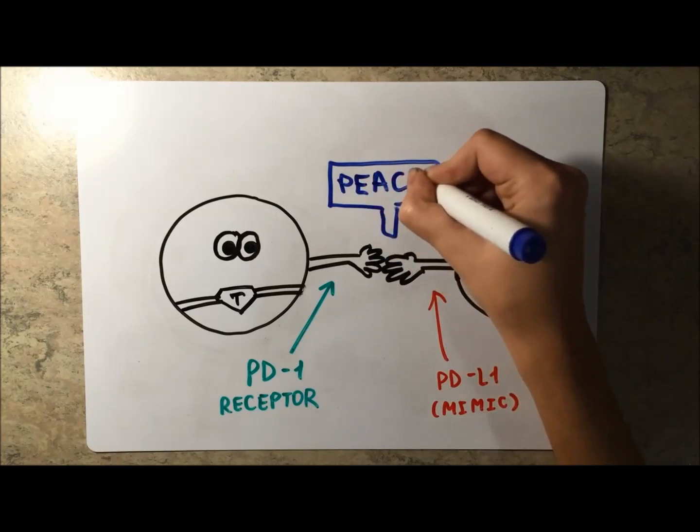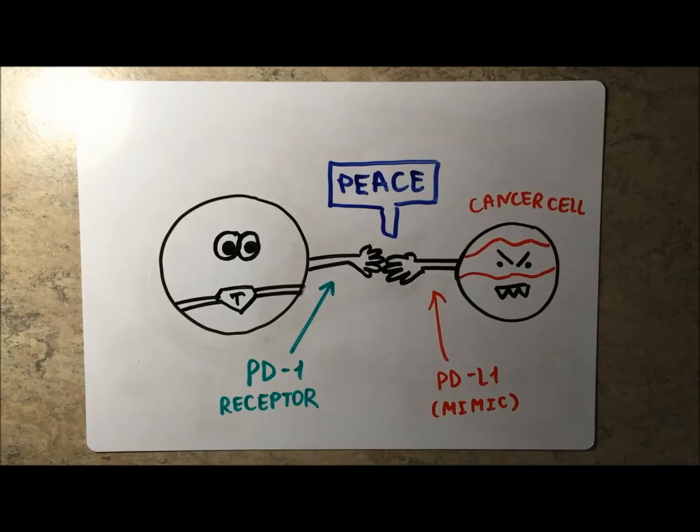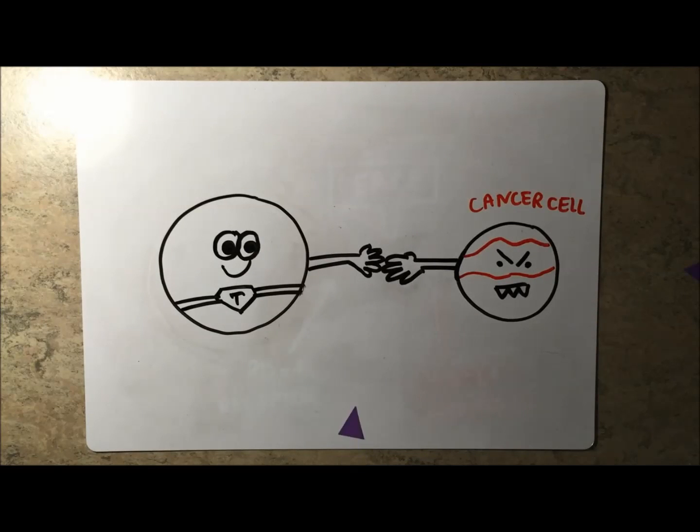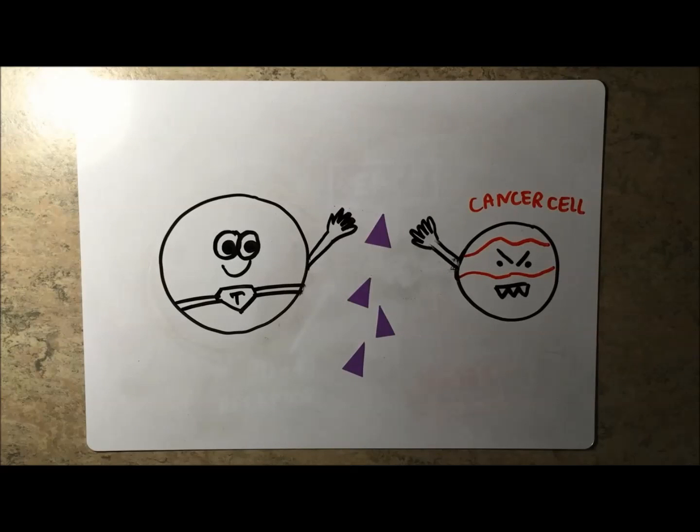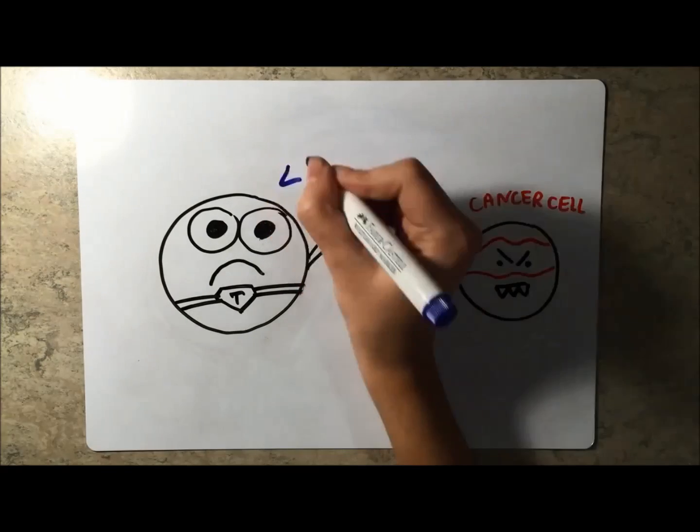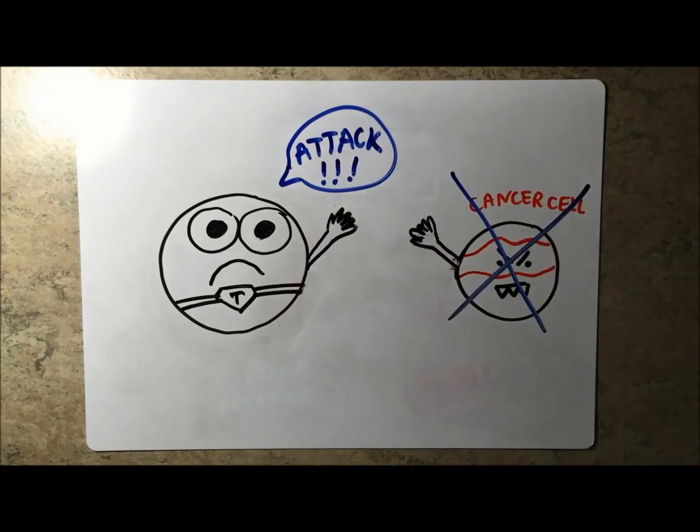As a result, T cells unknowingly let the cancer cells continue developing. This is precisely what immunotherapy tries to prevent. Man-made antibodies prevent the PD-1 receptor and the PD-L1 protein from interacting. Consequently, the T cells are stimulated and they begin their battle against the cancer cells.